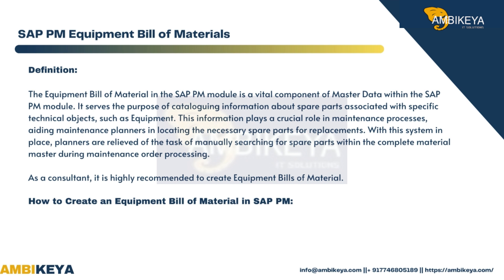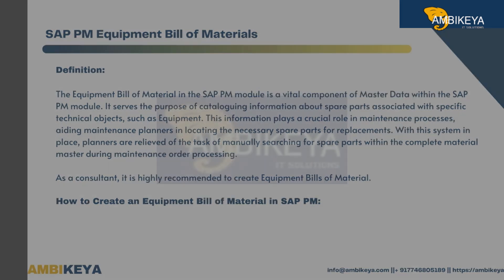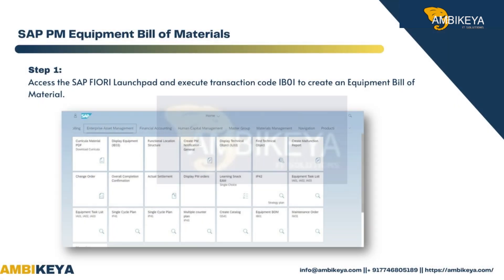How to create an equipment bill of material in SAP PM: Step 1 — Access the SAP Fiori Launchpad and execute transaction code IB01 to create an equipment bill of material.